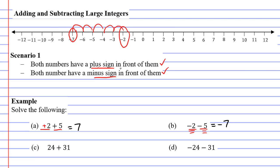Now let's make some observations here. When we look at questions A and B, they both use the exact same numbers. They both had a two and a five, except in one case they had the plus symbol in front of them, and in the other case they had the minus symbol in front of them.